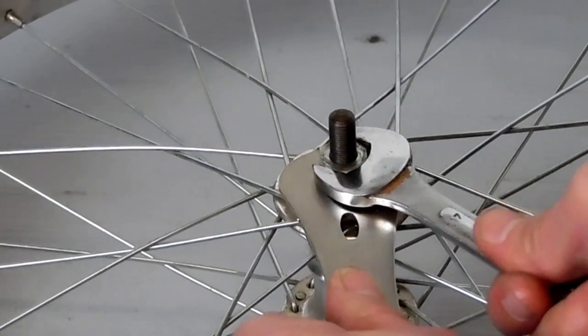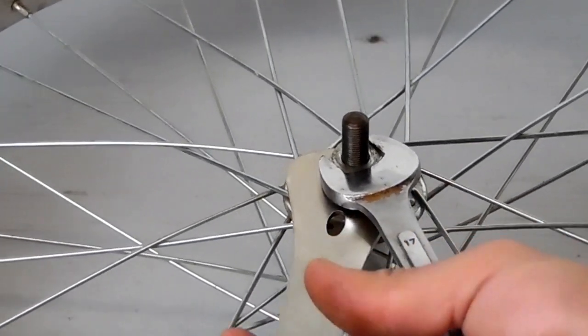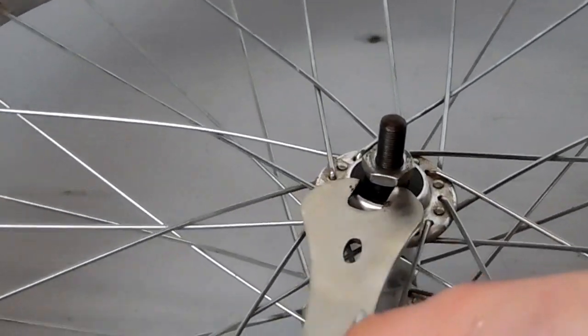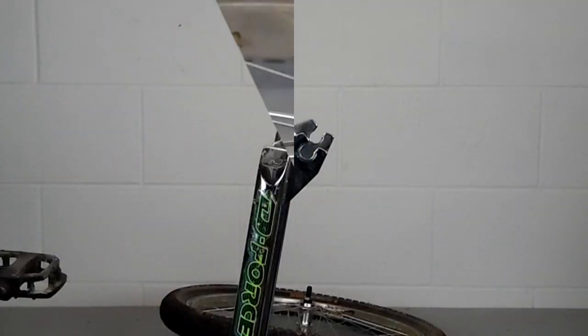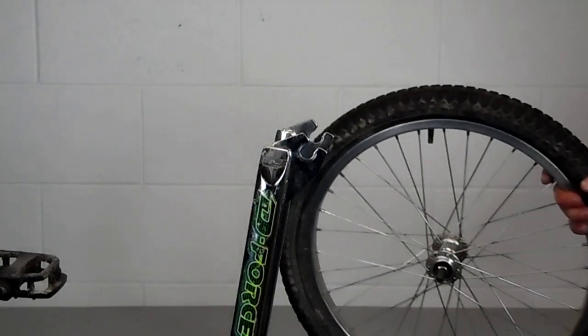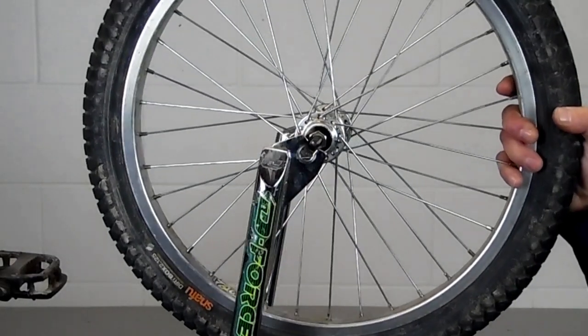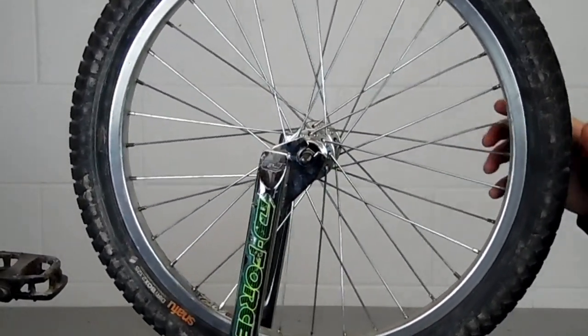Then once I get it snug to where I want it, I lock it down. And you might find that you have to have it a little bit loose and then lock it down for it to be perfect. You might have to have it a little bit tight and then lock it down for it to be perfect. You just check it afterwards and then reinstall the wheel.